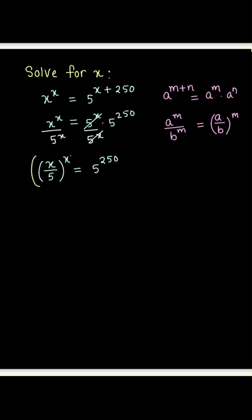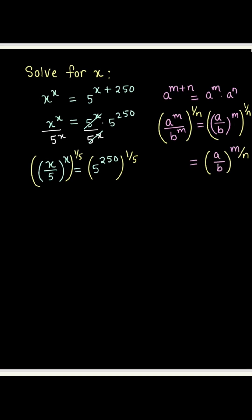We'll now take the fifth root of both sides, and this choice of taking the fifth root is a very deliberate choice. What it does is that it makes the left-hand side x over 5 raised to the power x over 5 — pretty neat, right? We'll now manipulate the right-hand side to bring it in the form such that it is also some number raised to the power that same number.